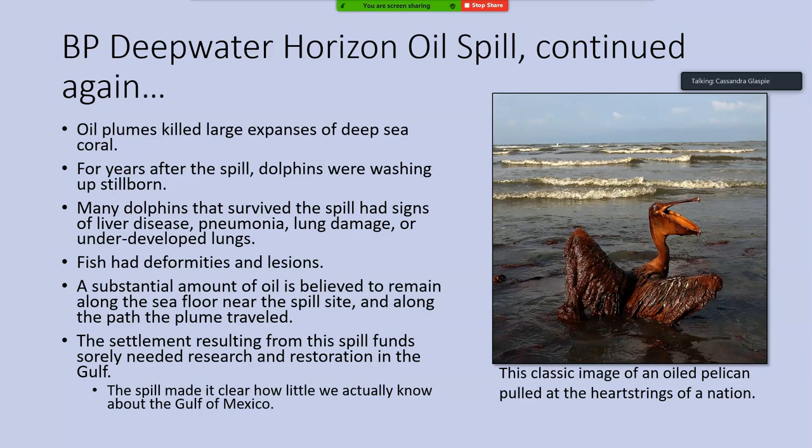In addition to all the loss of life during the response to the oil spill, for years after the spill, dolphins were washing up stillborn. Many dolphins that survived had signs of liver disease, pneumonia, lung damage, or underdeveloped lungs. Fish were caught with deformities and lesions. There is still a substantial amount of oil expected to remain along the seafloor near the spill site and along the plume's path, which may be causing additional impacts.